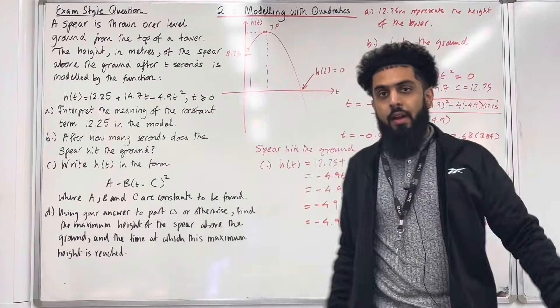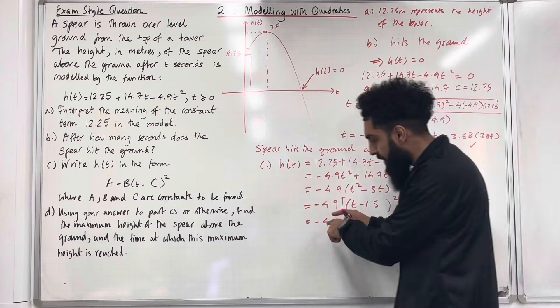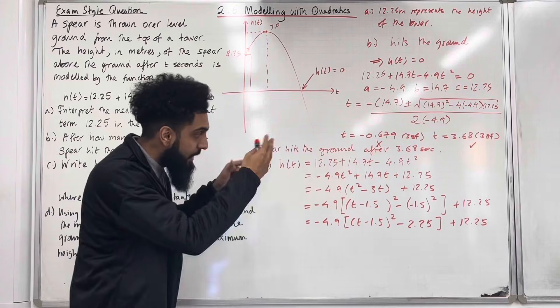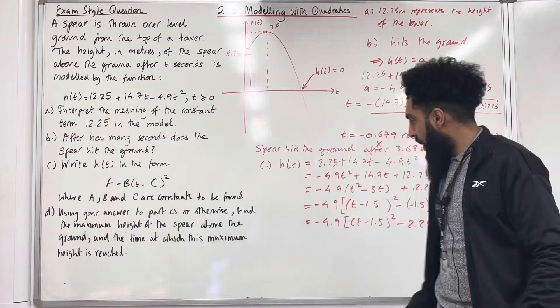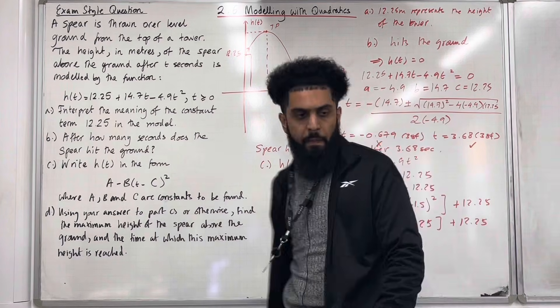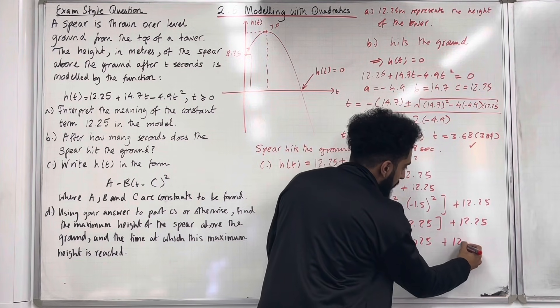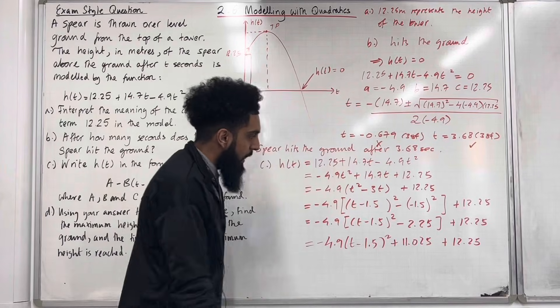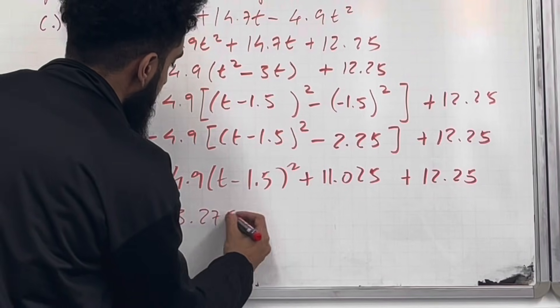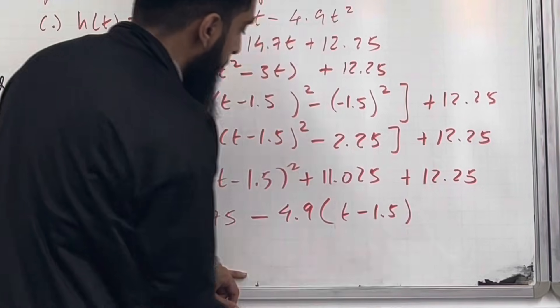So what is the next step? Well the next step is to expand the minus 4.9 with what I have inside the square bracket. Classic mistake: You don't take the minus 4.9 and multiply it by 12.25. You don't do that. Because the 12.25 is on the outside. It's not inside the square bracket. So be careful. So if I expand I get -4.9 in front of (t - 1.5)² and then I've got plus 11.025 plus the 12.25. So now I can add these two numbers together. So if I add these two numbers together I end up with 23.275 - 4.9(t - 1.5)².